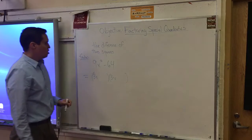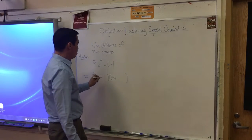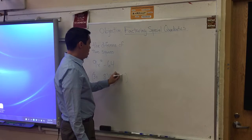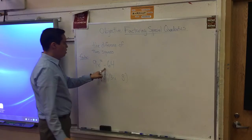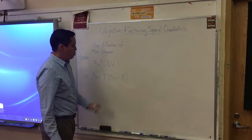And over here, you have a 64. 64 is also a perfect square. 8 times 8 is 64. So I'm going to write an 8 in here and an 8 in here. And the fact that it's negative means that we need a plus and a minus.